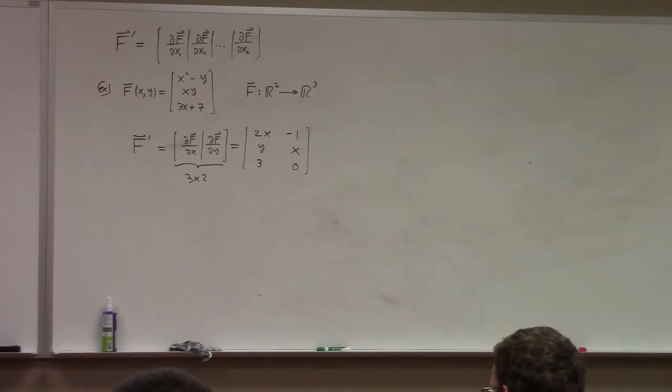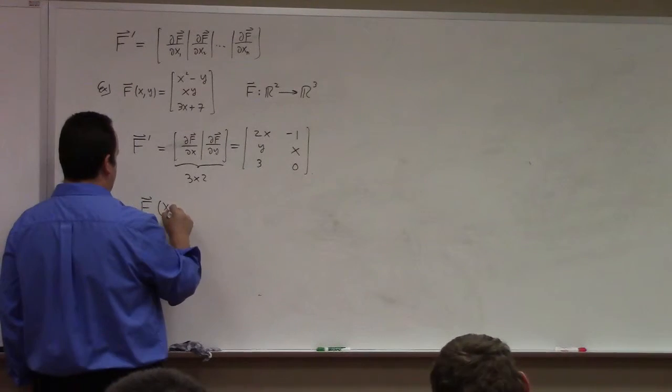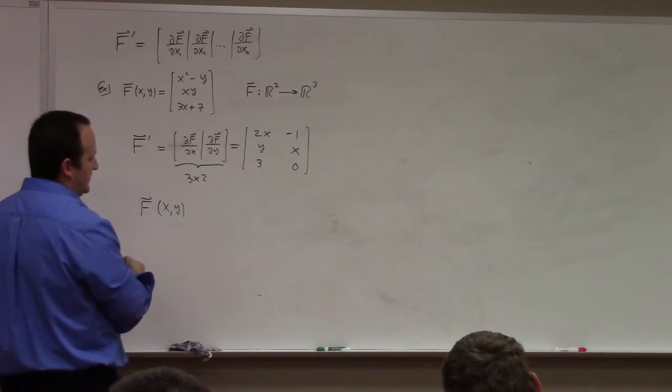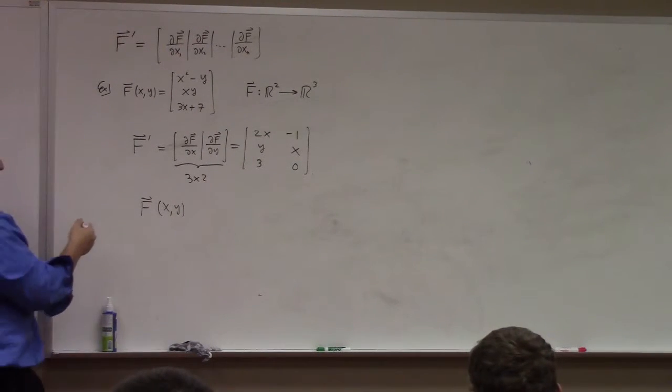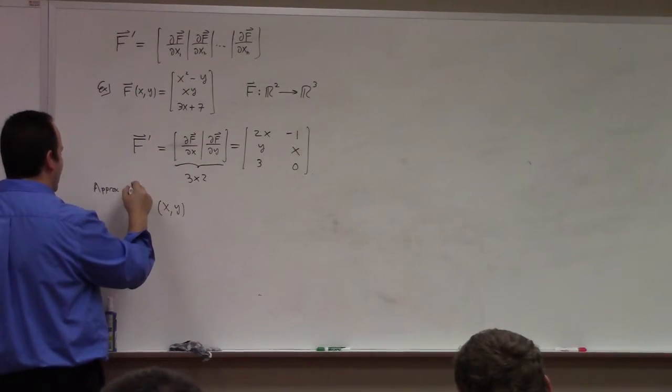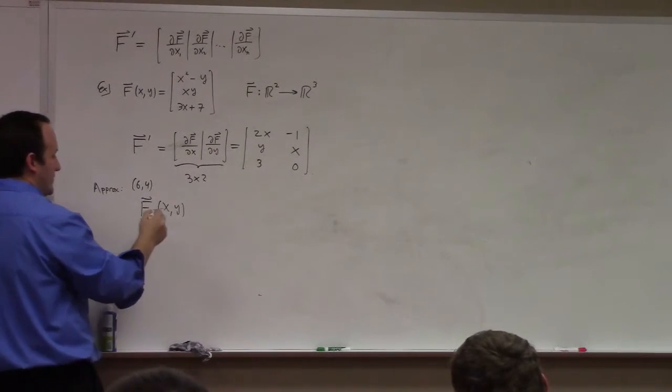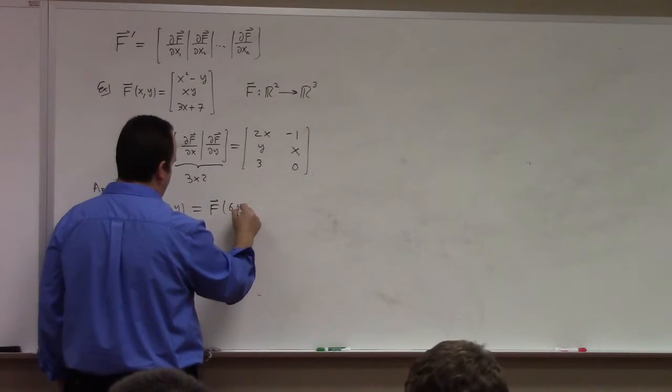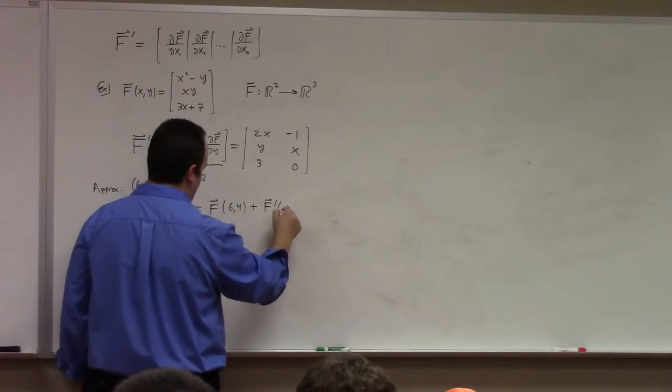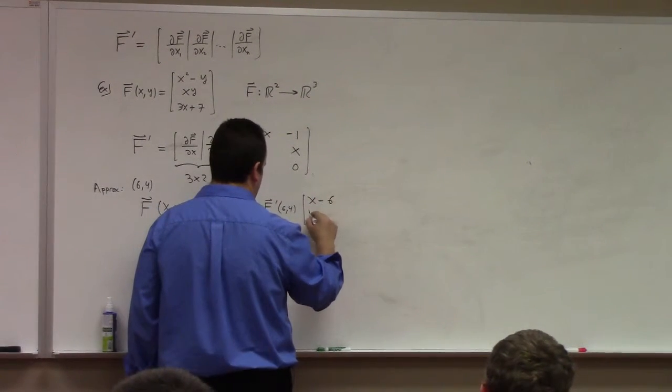If I wanted to approximate this function near a point, I could use this matrix to come up with an approximation. For example, if I wanted to say f of x, y, let's say, what point do you guys want me to approximate at? Any point you want. Pick a point for me. You say 0,0, I kill you. What's that? 6, 4. 6, 4? Okay. I'll take it. So what you do is you do f of 6, 4 plus f prime of 6, 4 times the column vector x minus 6, y minus 4. Look familiar?